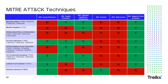For system binary proxy execution: adversaries may bypass process and signature-based defenses by proxying execution of malicious content with signed binaries — ENS provides exploit prevention and adaptive threat protection. For OS credential dumping: adversaries may attempt to dump credentials to obtain account logon and credential material normally in the form of a hash or clear text password from an operating system and software. Credentials can then be used for lateral movement and to access restricted information. ENS coverage is access protection, exploit prevention, dynamic application containment, and adaptive threat protection.